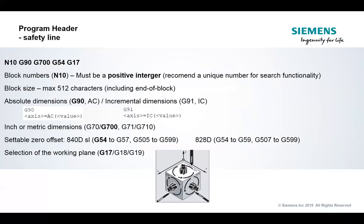From there, we build our safety block or program header. This is a pretty common structure, and a lot of it will be very familiar from the ISO side of the world. You don't have to have block numbers or sequence numbers, but they're a good thing to have in the part program — especially when you get into alarms or error messages, because the system will point you to the line. The minute you have an N number on the line, it's going to show up in the alarm message pointing you right there.